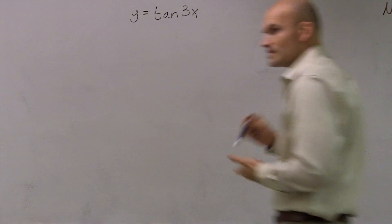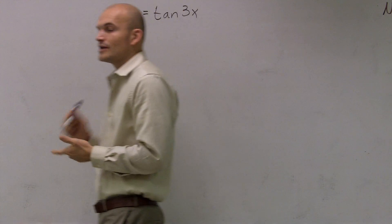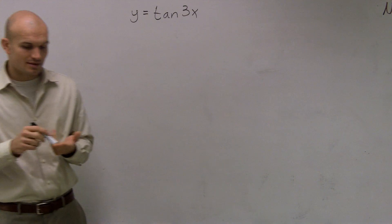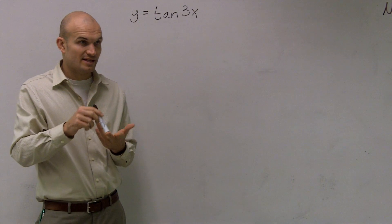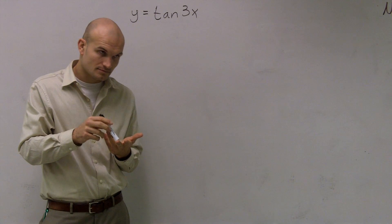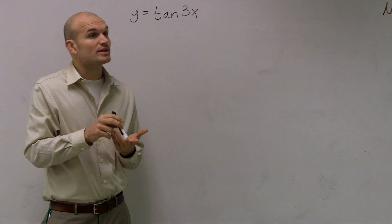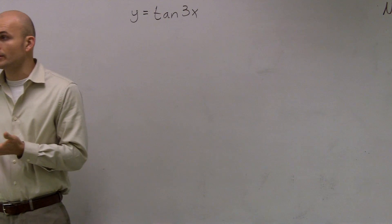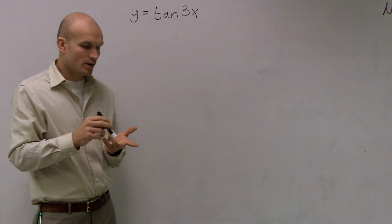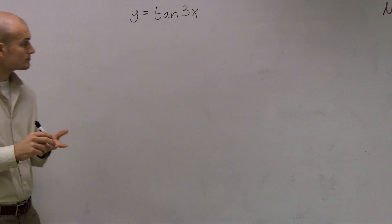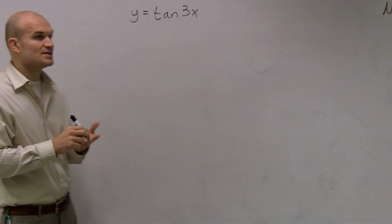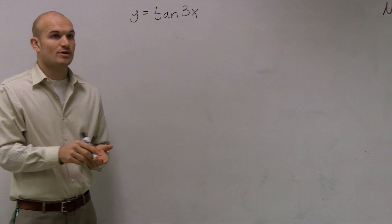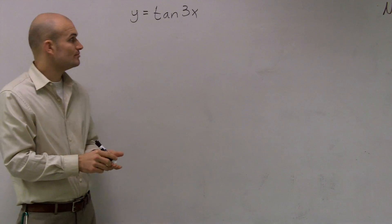When we were talking about sine and cosine graphs, the main important thing was finding our amplitude and our period. For tangent and cotangent, we obviously don't have an amplitude, so we're not going to have to worry about finding the amplitude.